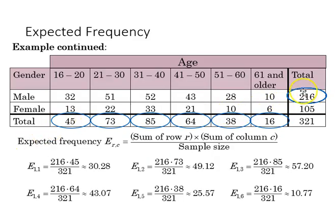There are 216 males, and then we have different numbers within each age category. If we take the overall number of males and multiply it by 45 and divide by the total sample, we get our expected frequency for the 16 to 20 year old males.